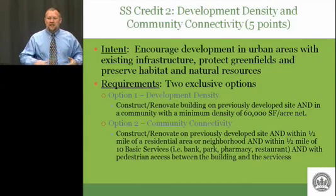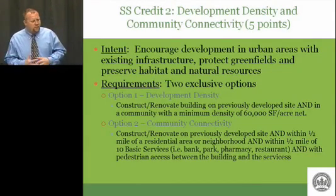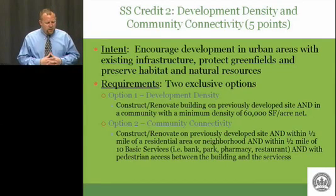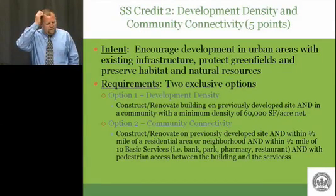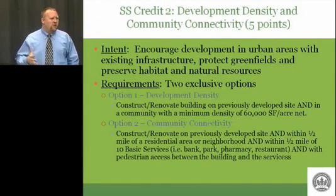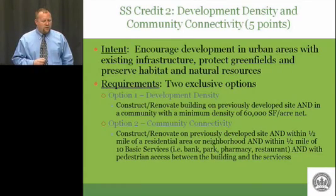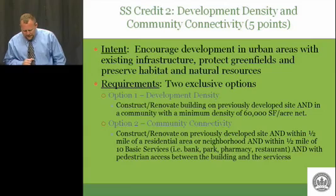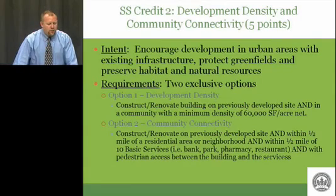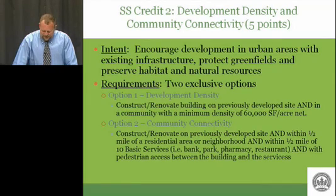Let's look at the intent — the overarching goal: encourage development in urban areas with existing infrastructure, protect green fields, and preserve habitat and natural resources. That's our overarching intent. Now let's look at the requirements. There are two mutually exclusive options — you pick one or the other. Option one is development density: construct or renovate a building on a previously developed site and in a community with a minimum density of 60,000 square feet per net acre.